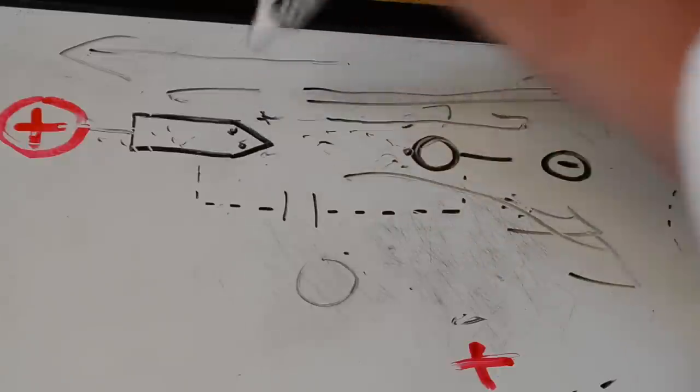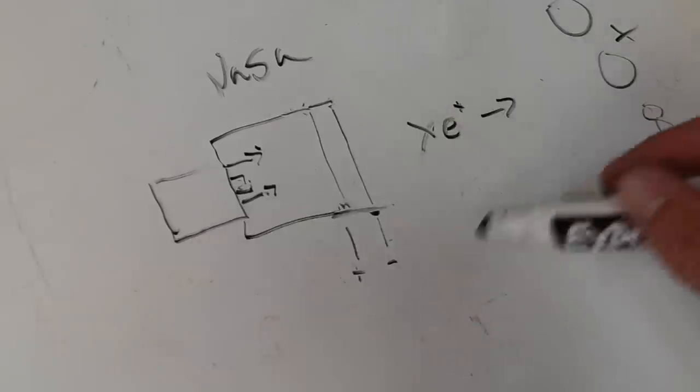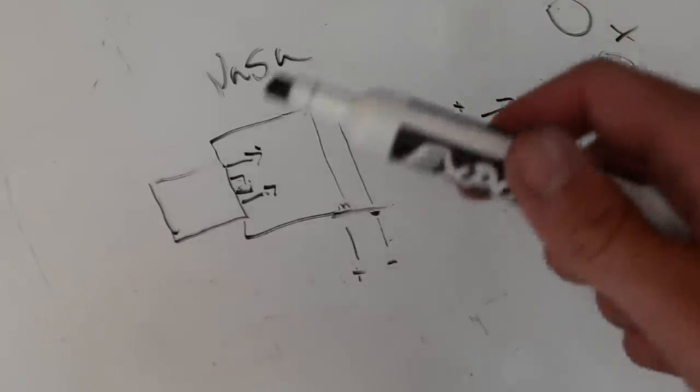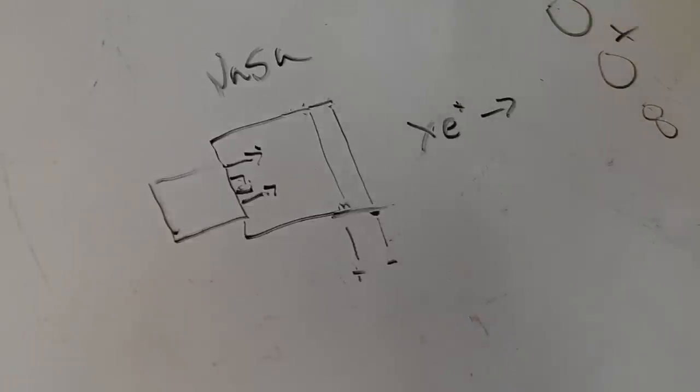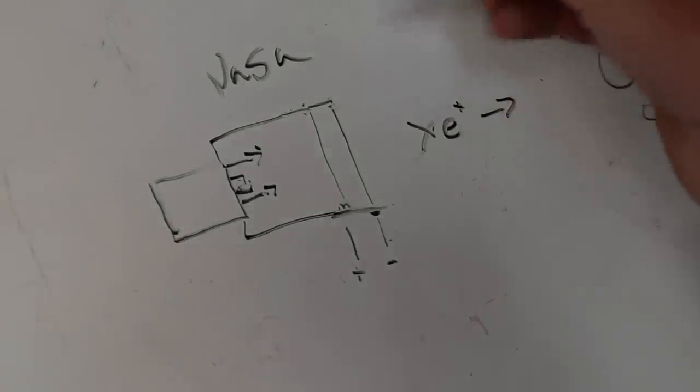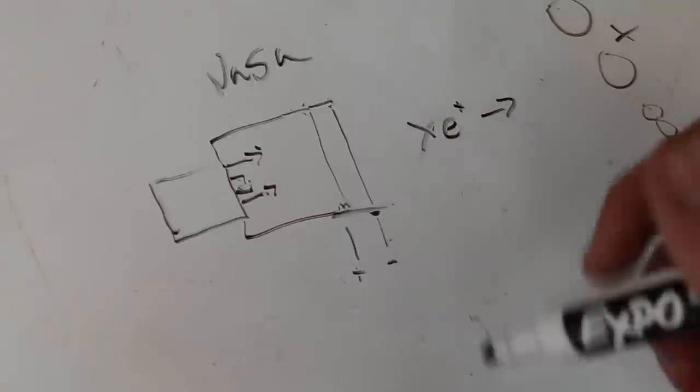So in simple ways, that's pretty much how an ion propulsion motor works. Although ion propulsion doesn't really generate enough thrust to get a satellite through Earth's atmosphere and out of Earth's gravity, it does, however, inside of the vacuum of space, create a very nice way to reach insanely fast speeds.